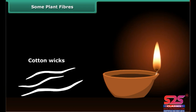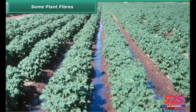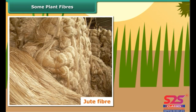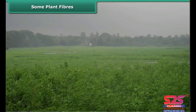Have you ever made wicks of earthen lamps during Diwali festival? They are made up of cotton, which is obtained from cotton plants grown in places having black soil and warm climate. The fruits of the cotton plant, after maturing, burst open and seed-covered cotton is obtained.